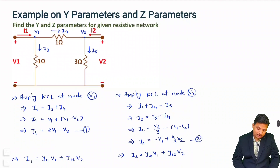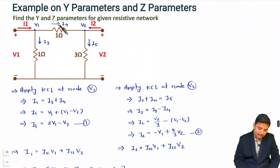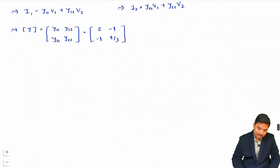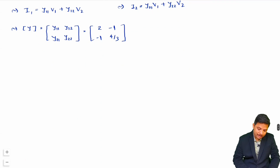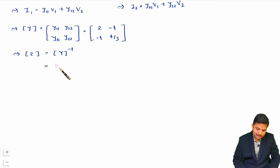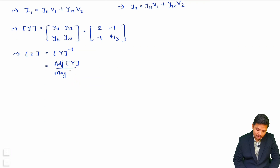Now, since the question also asks for Z parameters, once we have the Y matrix we can find the Z matrix. As I explained in my previous class, the Z matrix is the inverse of the Y matrix. The inverse of the Y matrix equals the adjoint of Y divided by the magnitude (determinant) of Y.